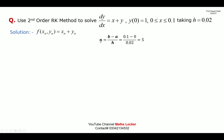Here, n means the number of iterations, or the number of pieces we divide the interval into. We divide 0 to 0.1 into n pieces. With b = 0.1, a = 0, and h = 0.02: n = (b − a)/h = 0.1/0.02 = 5. So we will solve 5 equations.